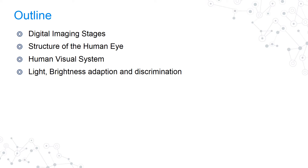To visualize what we require is light. We will see the effect of light, the electromagnetic spectrum, and the adaptation of brightness and its discrimination in perceiving the scene.